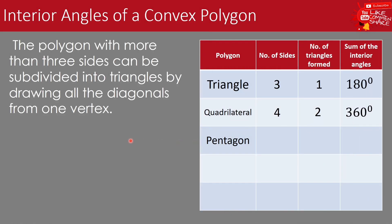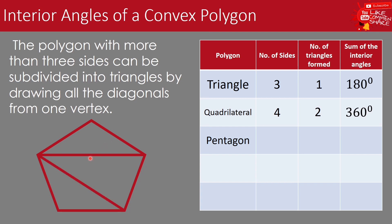Now let us have the pentagon. We draw a pentagon and then draw diagonals from one vertex — one, then another one, from one vertex to another. We form three triangles: one, two, and three. So a pentagon has five sides. Since we have three triangles formed by drawing diagonals from one vertex, and each triangle has a sum of interior angles of 180 degrees, three times 180 degrees equals 540 degrees. Therefore, the pentagon has a sum of interior angles equal to 540 degrees.